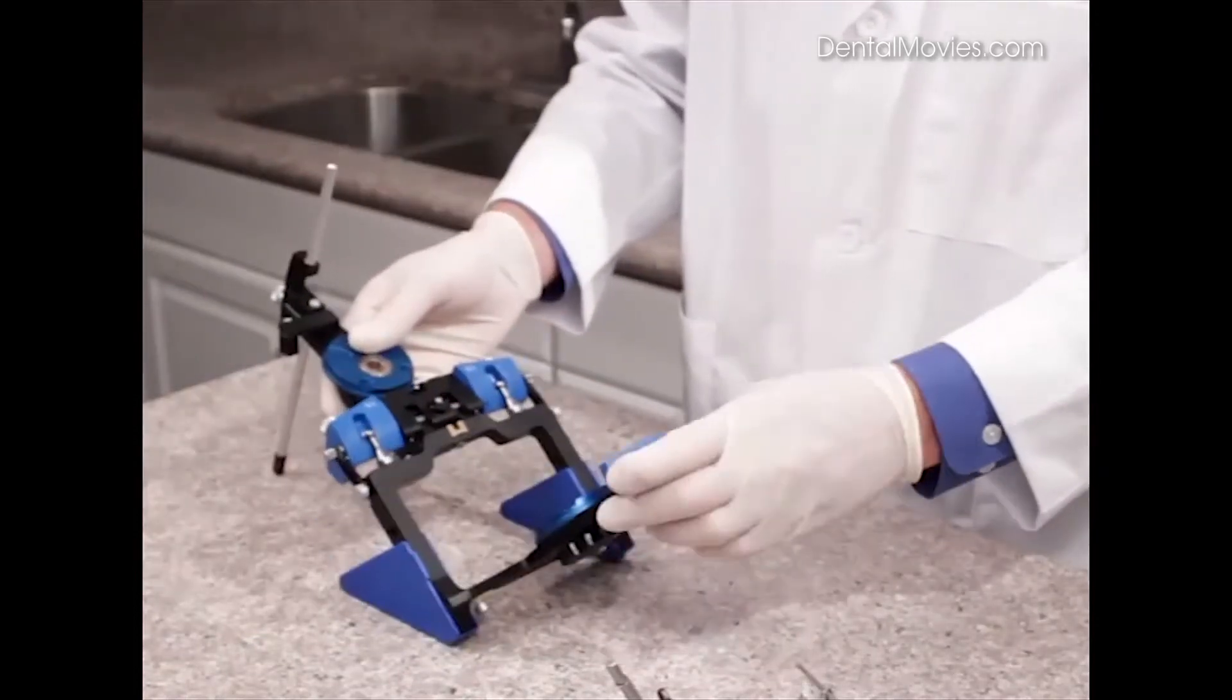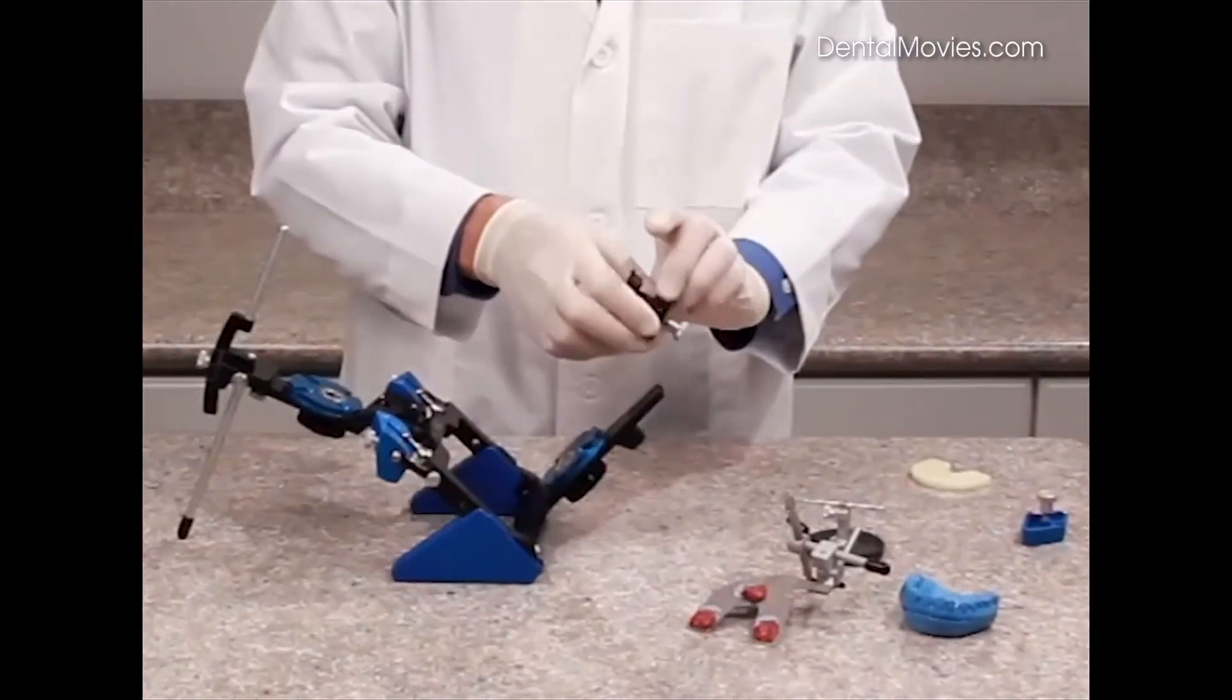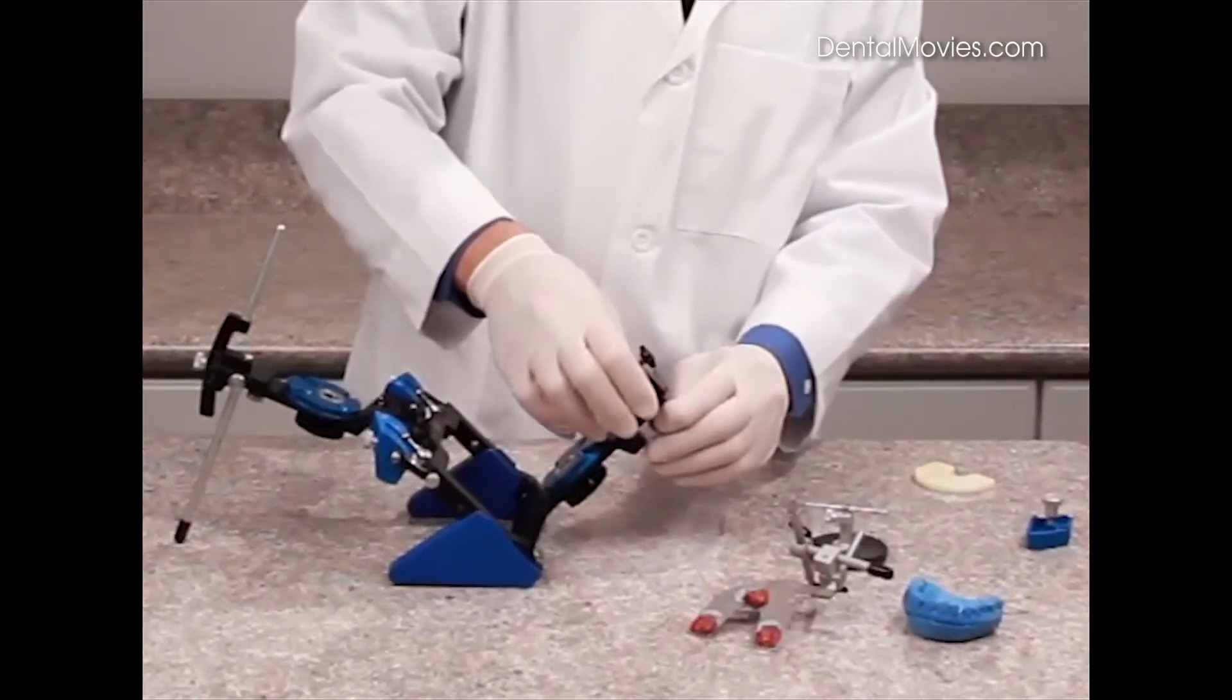Now swing this back, and we do want to remove the incisal table and replace it with the mounting fixture, which slides into place and tightens with the screw.